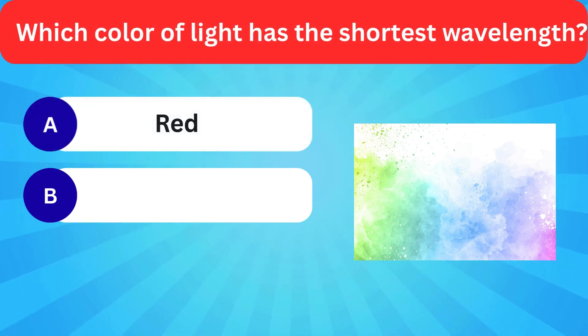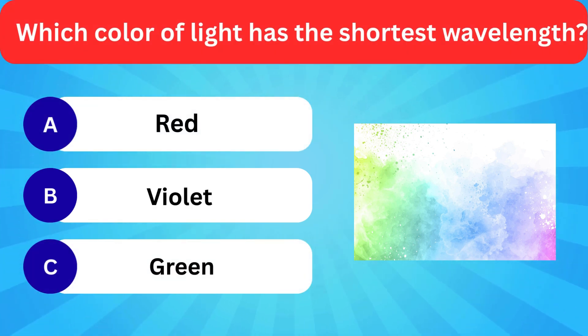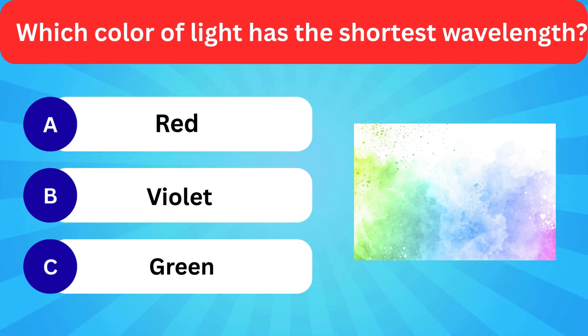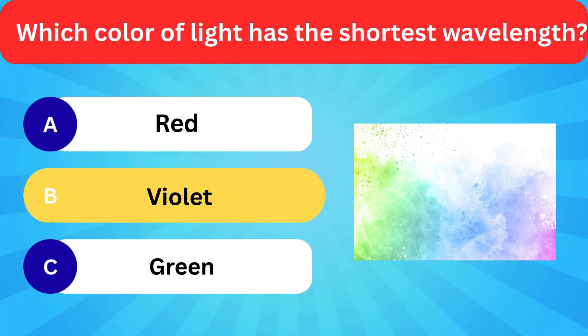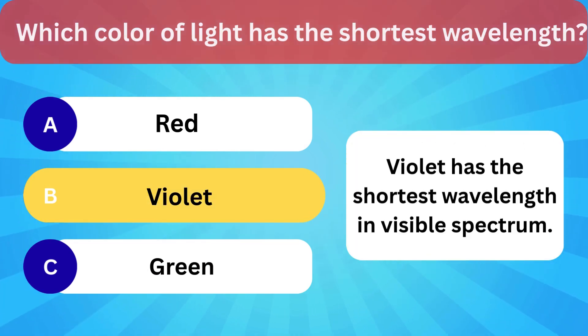Which color of light has the shortest wavelength? Options: Red, Violet, Green. Correct answer is Violet. Violet has the shortest wavelength in the visible spectrum.